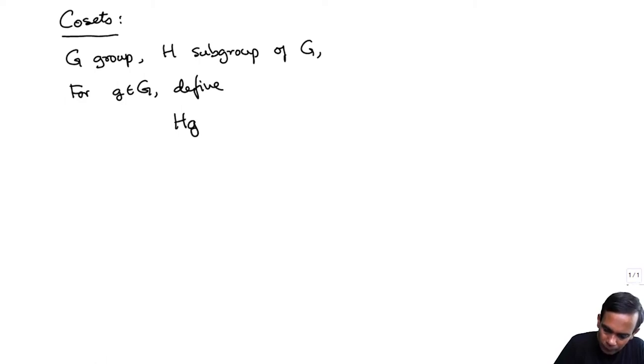H times g. As this notation suggests, this is the product H times g as H runs over all the elements of H. This is called a right coset of H.